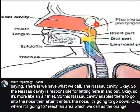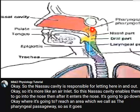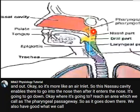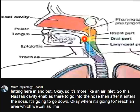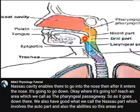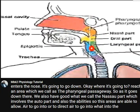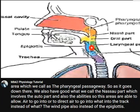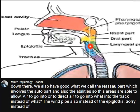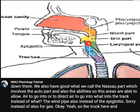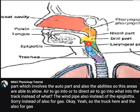As air goes down the pharyngeal passageway, we also have the nasal part, which involves the oral part and the glottis. These areas are able to direct air into the trachea instead of the oesophagus. The trachea and the oesophagus are adjacent to each other.